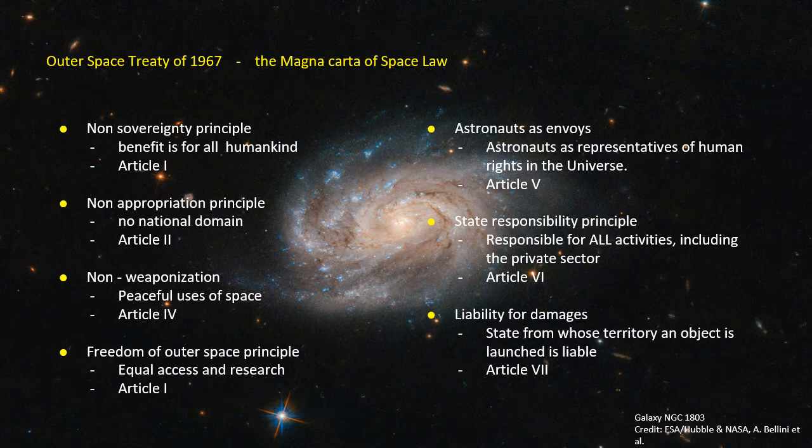Third, the non-weaponization principle expressly states that all state parties to the treaty undertake not to place in orbit around the Earth any objects carrying nuclear weapons or weapons of mass destruction, install such weapons on celestial bodies, or station such weapons in outer space in any other manner.